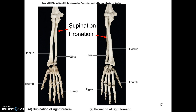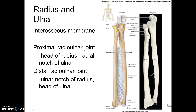This is part two of chapter 8b and 9b on the appendicular skeleton of the upper limb, including the pectoral girdle and associated articulations. We were last talking about the radius and ulna — the specific bone markings responsible for the articulation between those two bones — the two synovial joints: the proximal and distal radioulnar joints.